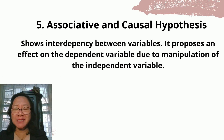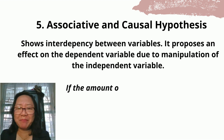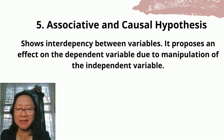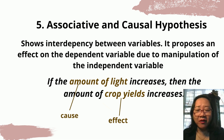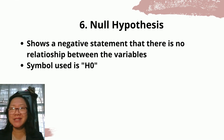The fifth type is associative and causal hypothesis. It shows interdependency between variables and proposes an effect on the dependent variable due to manipulation of the independent variable. Example: if the amount of light increases, then the amount of crop yields increases. Amount of light is the cause and crop yield is the effect.